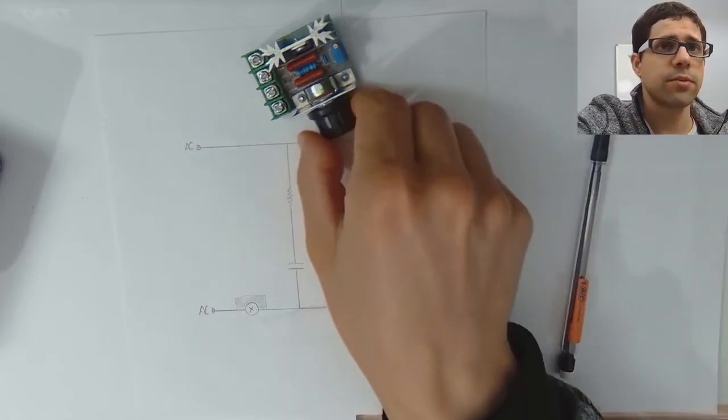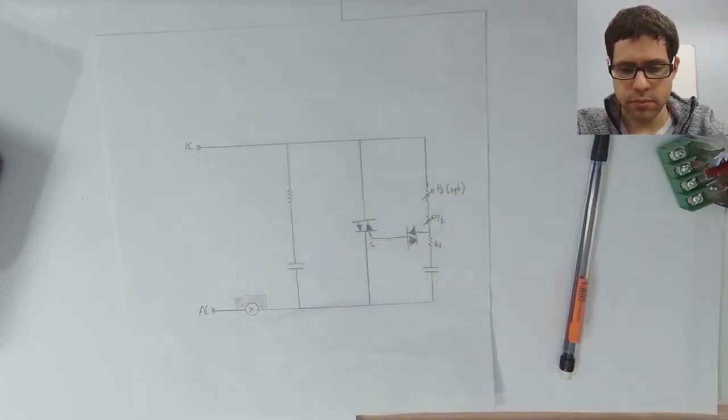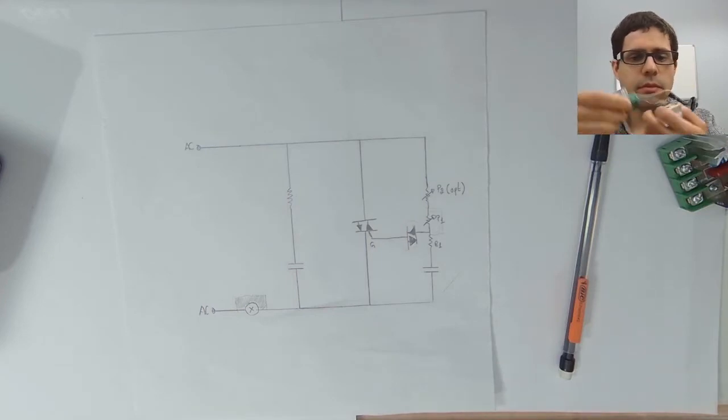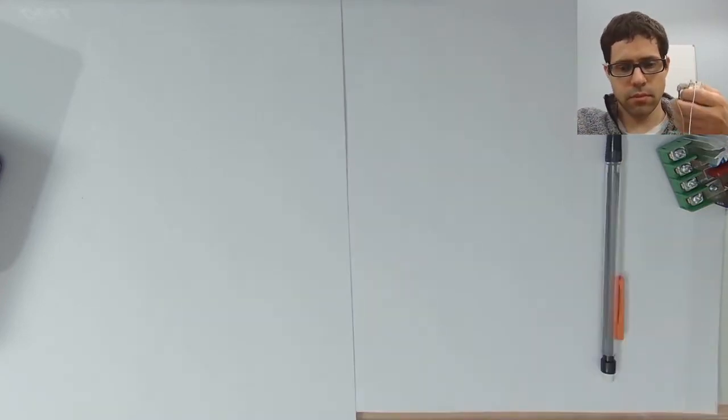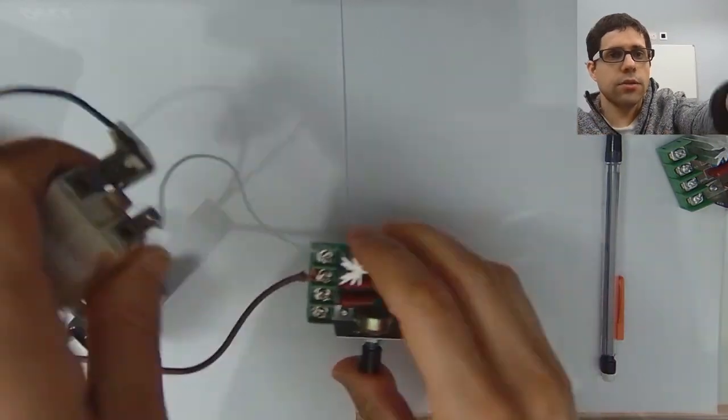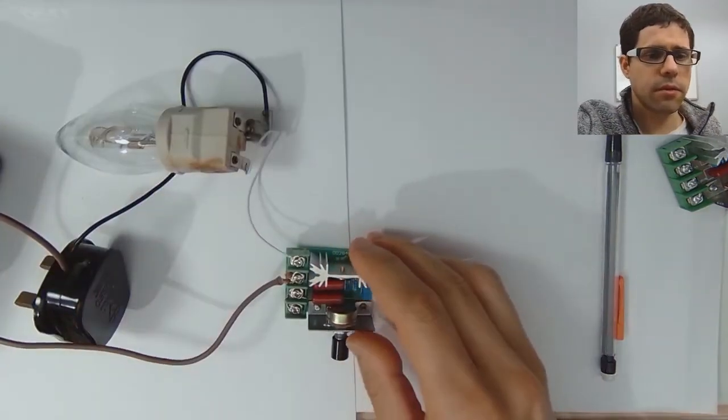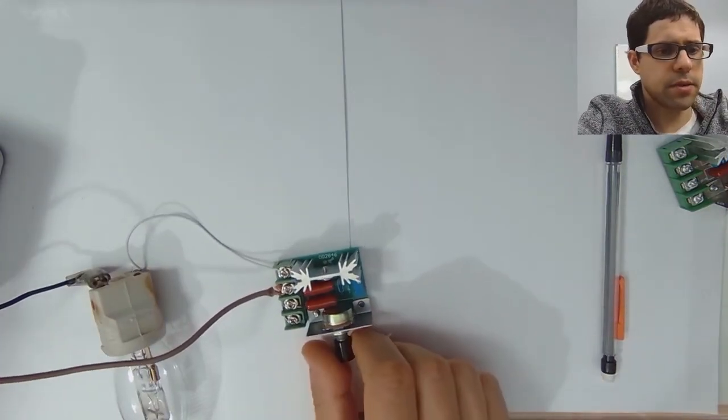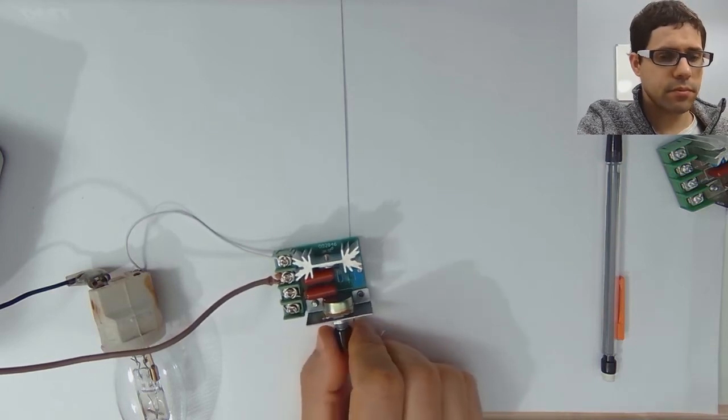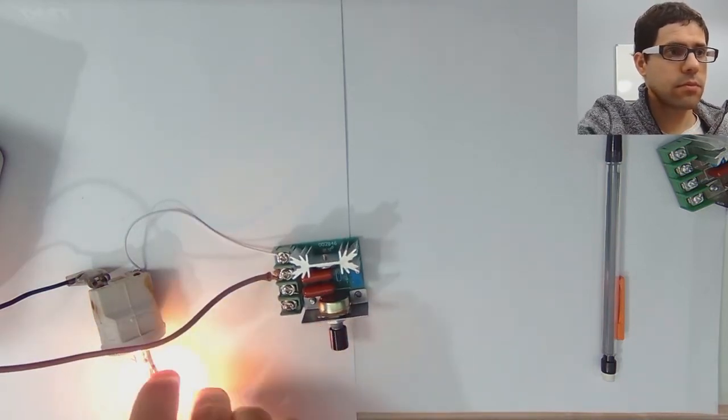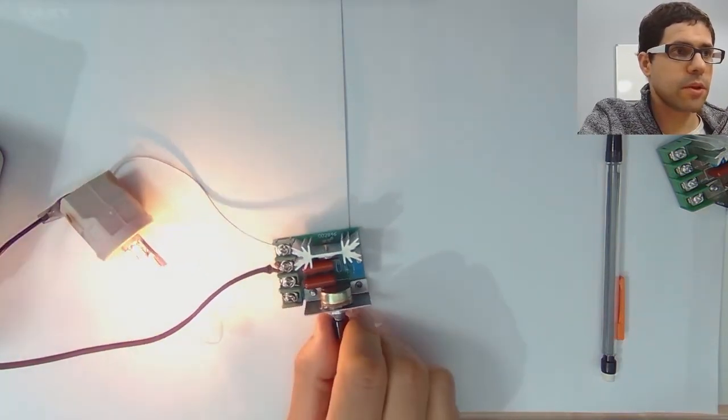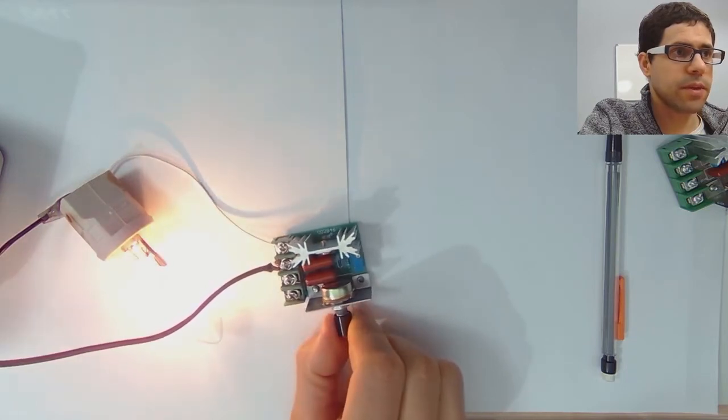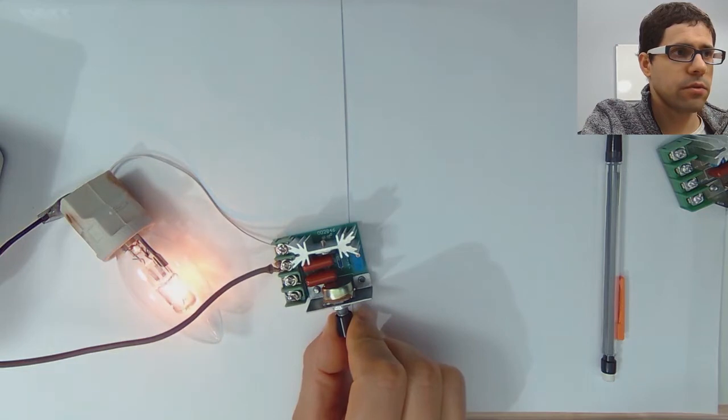Now let's see how this works in practice. I have an assembled circuit and I'm going to plug this circuit in. We can see the bulb comes on with various amounts of brightness from very low to fully on.